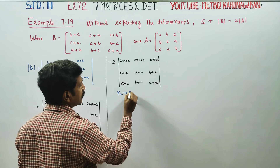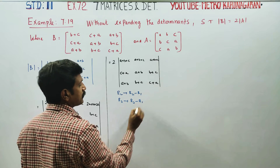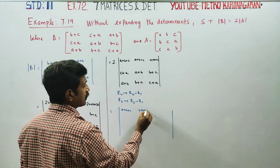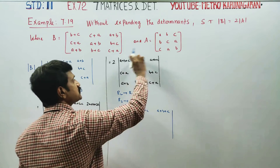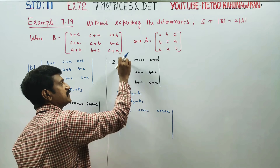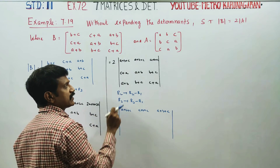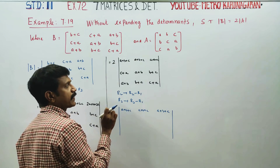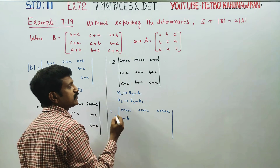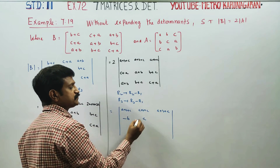Next, apply R2 = R2 − R1 and R3 = R3 − R1. Since we have already used A+B+C in R1, we apply this subtraction. For R2: this minus this — C cancels, A cancels, only minus B remains; this minus this — 3 elements simplify, C cancels, only minus B remains; this minus this — A, B, C cancel, only minus C remains.